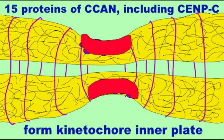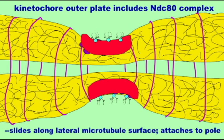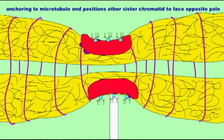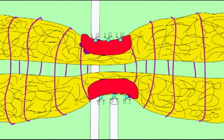There is a special histone protein which only binds to the DNA of centromeres. This then attracts other proteins of the constitutive centromere-associated network, or CCAN.